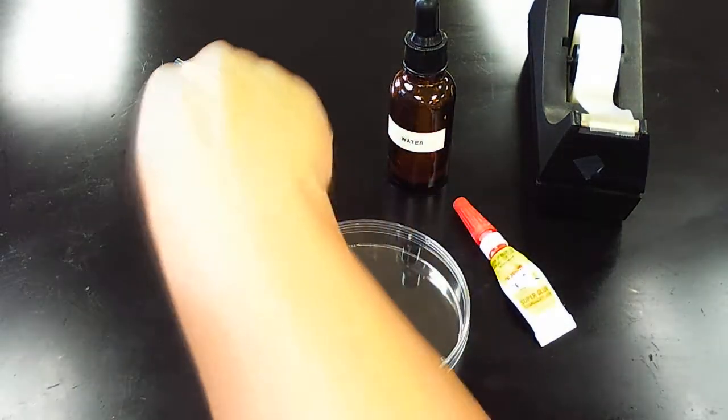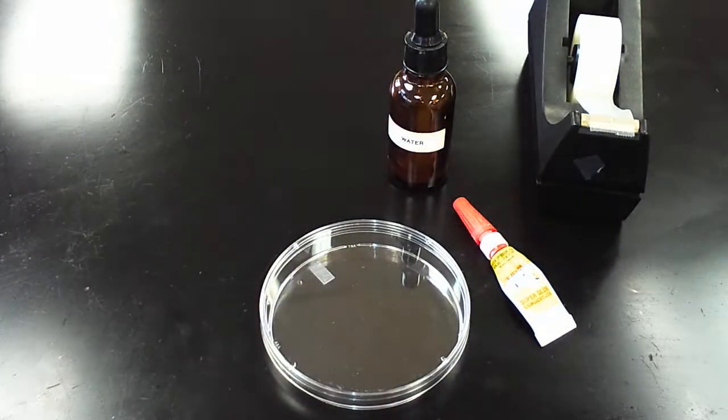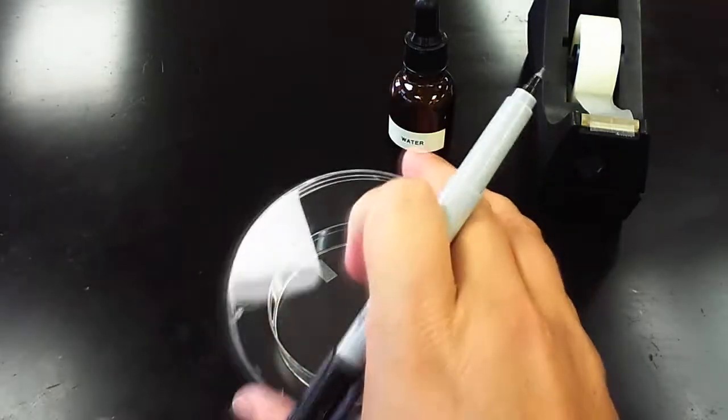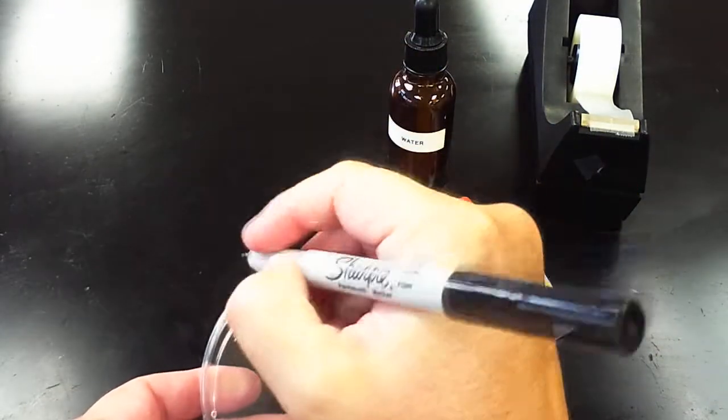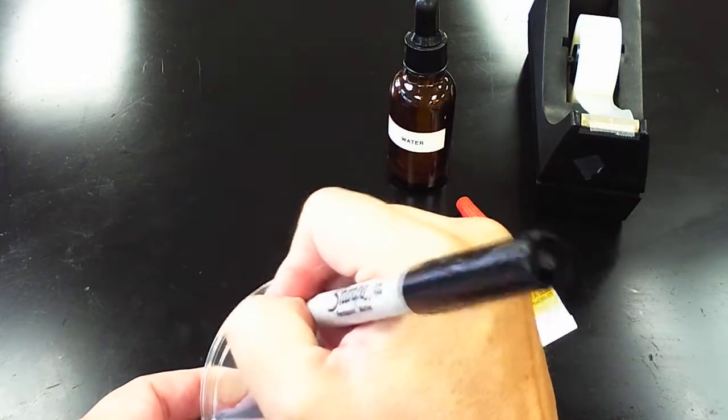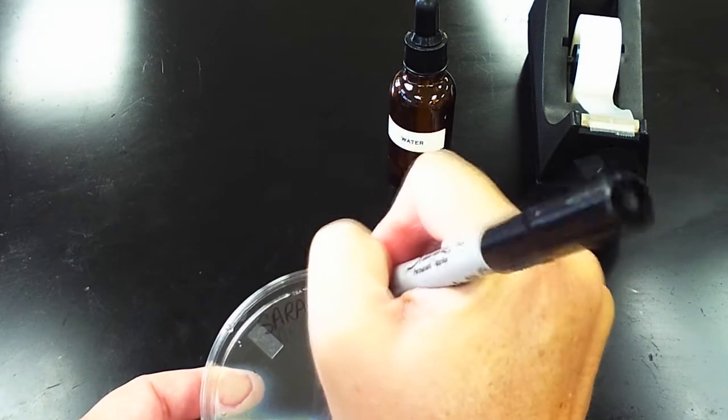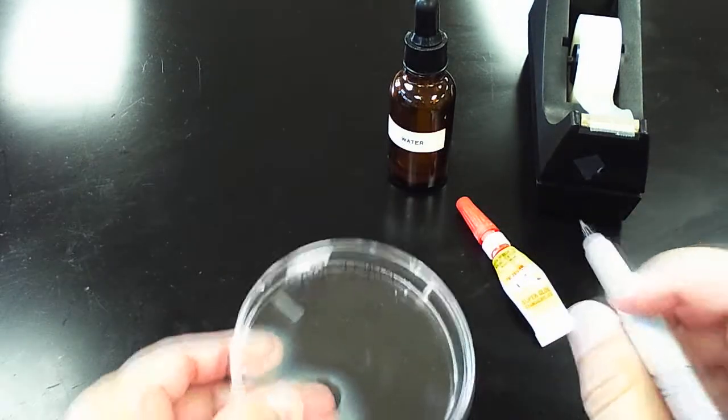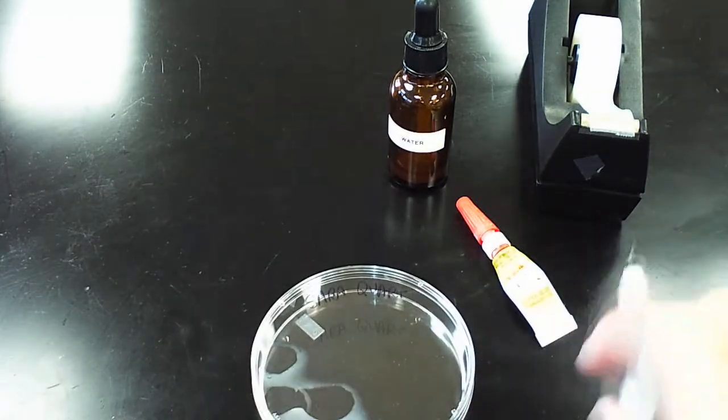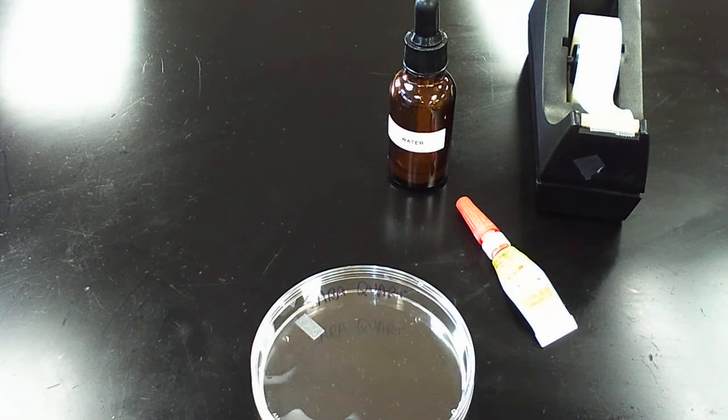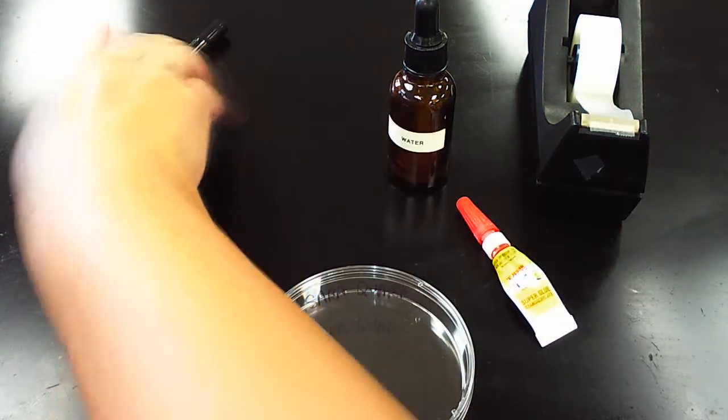The first thing I want you to do is take the sharpie marker and on top of the petri dish write your name, first and last please. That way we can keep track of everybody's fingerprints. That's the only reason why you need the sharpie.